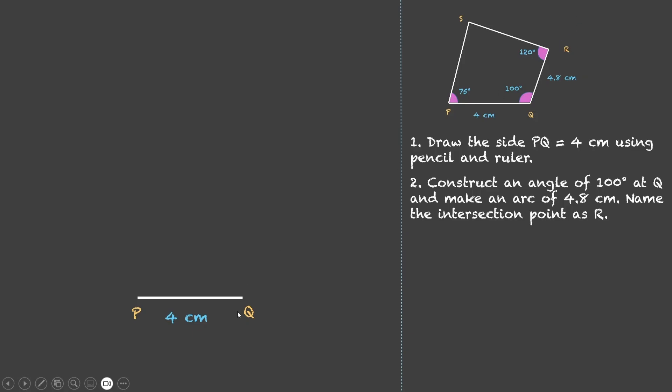So let us get one protractor and this is our 100 degrees. So we will just draw one line passing through 100 degrees over here, and the angle Q is 100 degrees.